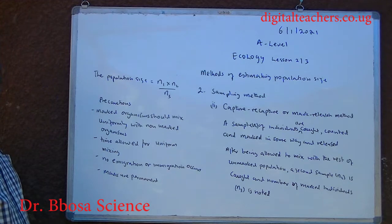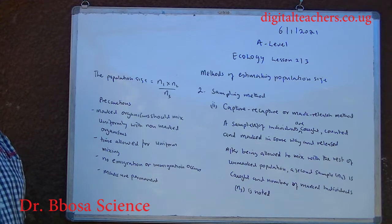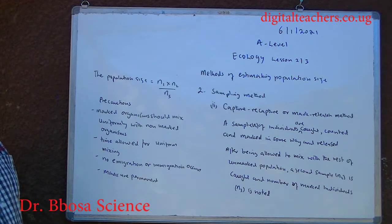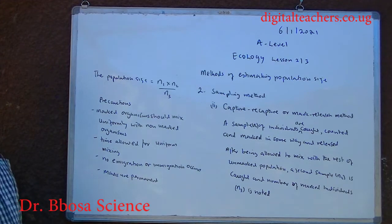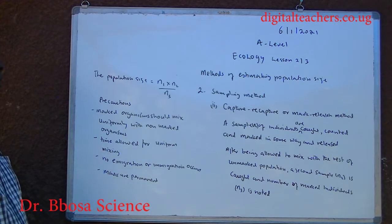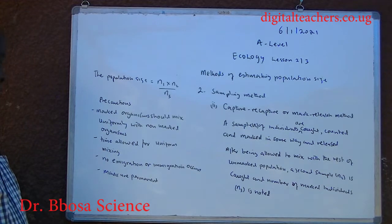Mark-release-recapture method: a sample — number N1 — of individuals are caught, counted, marked in some way and released. After being allowed to mix with the rest of the unmarked population, a second sample is caught and the number of marked individuals — N3 — is noted. Then population size equals N1 times N2 over N3. Precautions: marked organisms should mix uniformly with non-marked organisms; time must be allowed for uniform mixing; no emigration or immigration occurs; and marks are permanent.